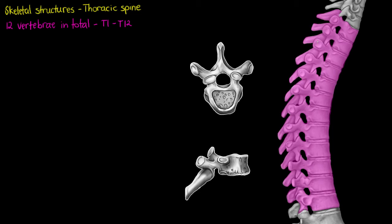These little bulb-shaped things that I'm just outlining now are unique to our thoracic vertebrae. They're called costal facets. The costal facets of our thoracic vertebrae are what are going to be interacting with and articulating with our ribs. We have our transverse costal facets here — this here is a transverse costal facet.